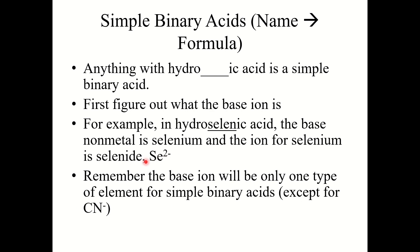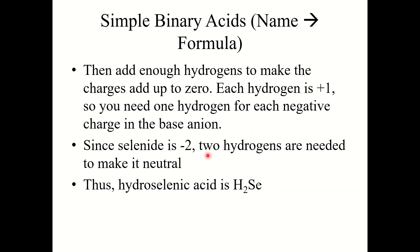So hydroselenic acid comes from selenide, Se²⁻. Now all you need to do is add enough hydrogens to make the charges add up to zero, since acids are neutral just like ionic compounds. Each hydrogen has a charge of +1, so you need one hydrogen for each negative charge in the base anion. Since selenide is minus two, you need to add two hydrogens, making it H2Se(aq).